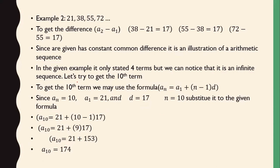Let's have another example. We have 21, 38, 55, and 72. To get the common difference and verify it is an arithmetic sequence, subtract the second term from the first: 38 minus 21 equals 17; 55 minus 38 equals 17; 72 minus 55 equals 17. So the common difference is 17. Since our given has a constant common difference, it is an illustration of an arithmetic sequence.